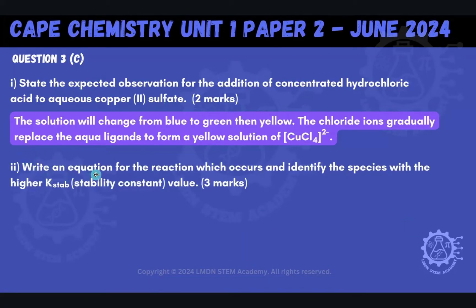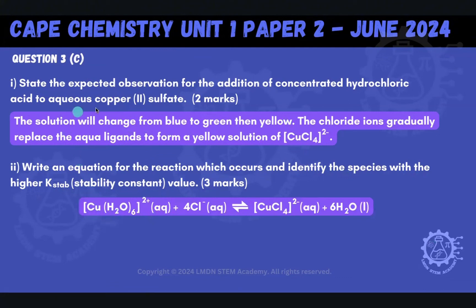The other part says write an equation for the reaction and identify the species with the higher stability constant value. We write a net ionic equation: we show the hexaaqua copper 2 complex reacting with chloride ions in an equilibrium to form the tetrachlorocuprate 2 complex — that's the copper chloride complex — and the displaced water molecules.